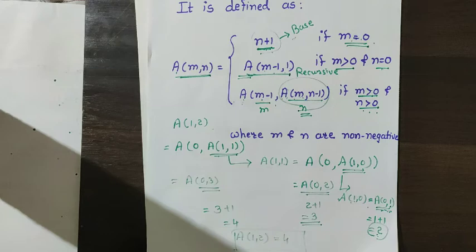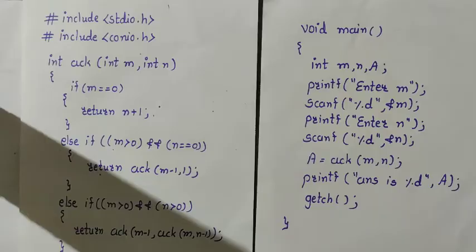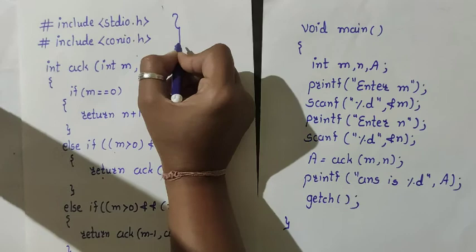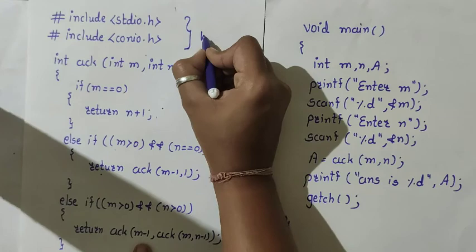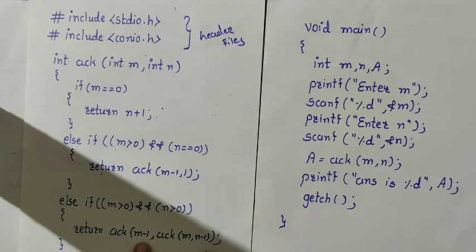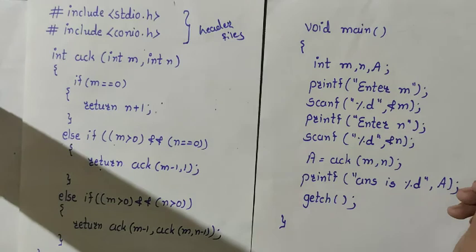I hope you understand this theory portion. Now we'll see the practical implementation — the program for this. The program is in two parts, starting with header files: #include stdio.h and #include conio.h.